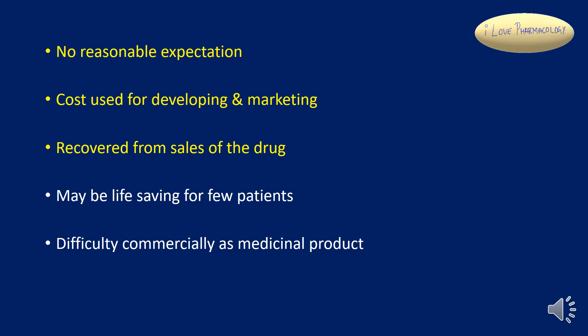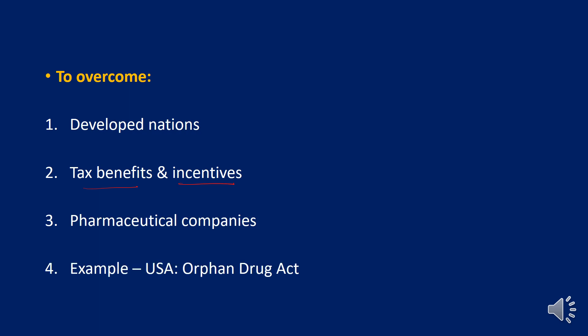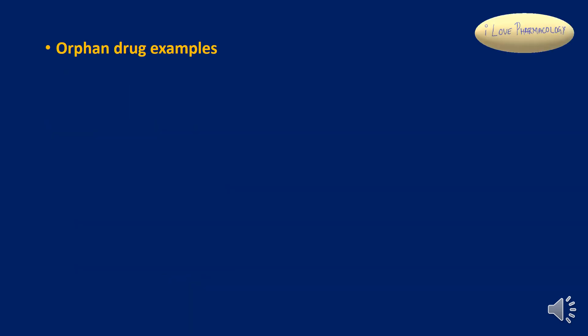The practical problem is there is a difficulty in commercialization of this kind of medicinal products. So how to overcome this? This can be overcome by giving tax benefits as well as incentives to the pharmaceutical companies. For example, the USA has formed the Orphan Drug Act to provide tax benefits as well as incentives to develop orphan drugs.